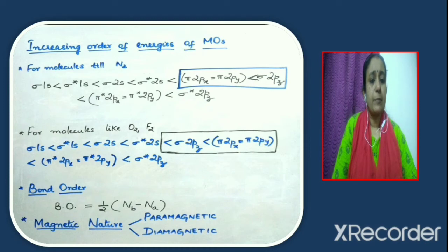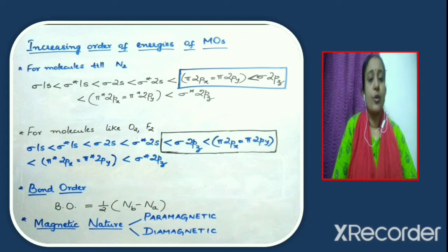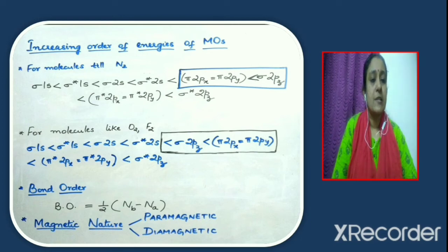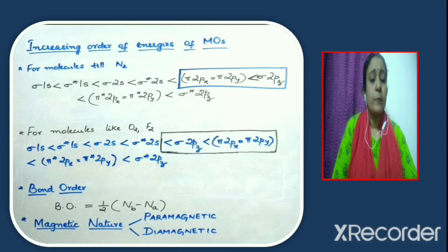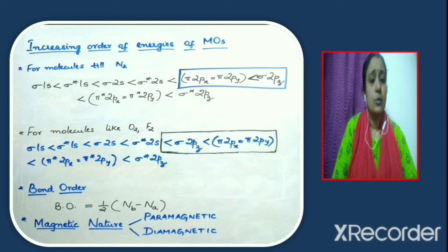Just like atomic orbitals can be arranged in the order of increasing energies, molecular orbitals can also be arranged in the order of increasing energies. For molecules up to nitrogen, the order is: sigma 1s < sigma star 1s < sigma 2s < sigma star 2s < pi 2px = pi 2py < sigma 2pz < pi star 2px < pi star 2py < sigma star 2pz. Note that pi 2px and pi 2py orbitals have the same energy and are said to be degenerate. Similarly, pi star 2px and pi star 2py orbitals are also degenerate.